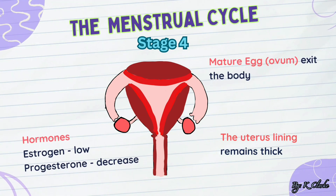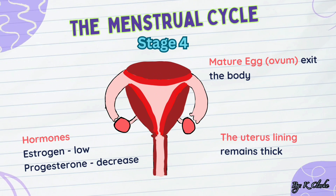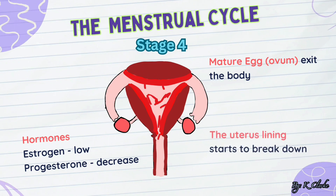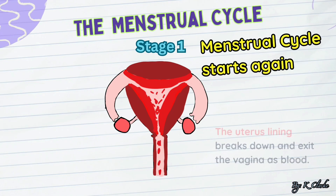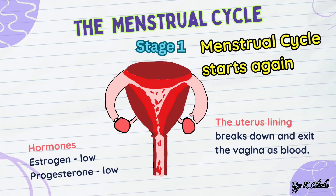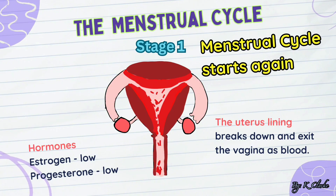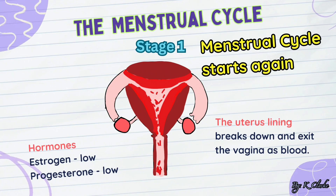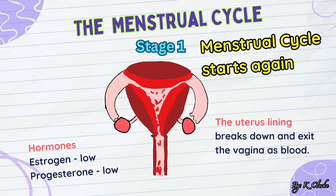After the egg leaves the birth canal, the level of estrogen is low and the progesterone level decreases. Afterwards, the uterus lining starts to break down. The menstrual cycle restarts as the hormone levels of estrogen and progesterone are low and the uterus lining exits the body through the vagina.